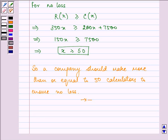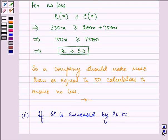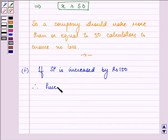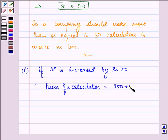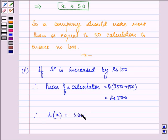Further, for the second part, if selling price is increased by Rs. 150, this means that now the price of calculator will be, previously it was 350, now add 150 to it. So now it will be Rs. 500. This means our revenue function is changed from 350x to R(x) = 500x.